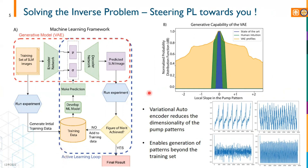We train our generative model, which is a variational autoencoder, on a set of SLM images, and develop a model where the effective local slope of the pump pattern from the VAE profiles — which is the orange curve — goes far beyond the training set. We get a lower dimensional representation of these images using this VAE.